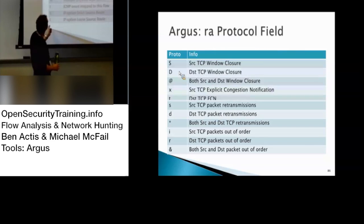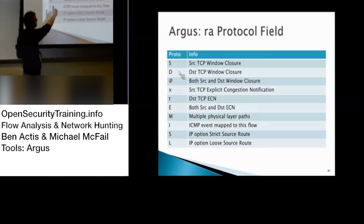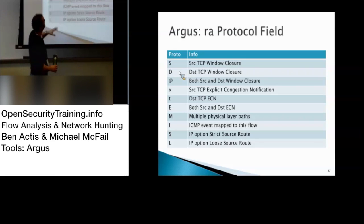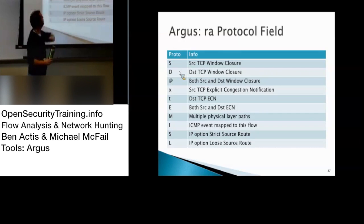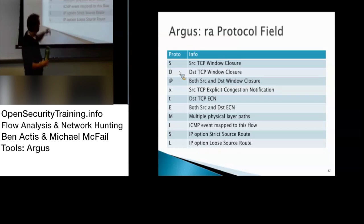Here's what I don't like about it. This field has multiple — about three horizontal spacings — and there'll be two capital S's. So when you look at it, you're going to have to look at the spacings to figure out which S it is. Source TCP window closure, destination TCP window closure — the ampersand symbol means fault. ICMP, script source route, and the optional source route as well.